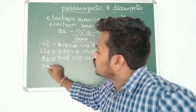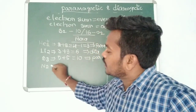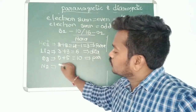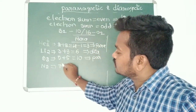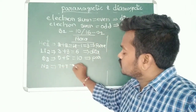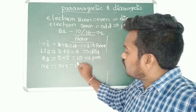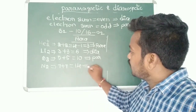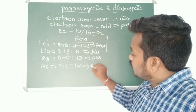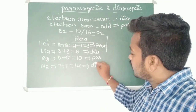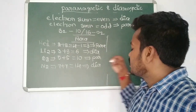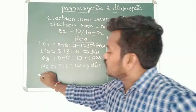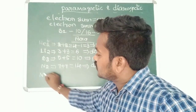Next, N₂: nitrogen has atomic number 7, so 7 + 7 = 14 electrons. 14 is an even number, so N₂ is diamagnetic in nature.